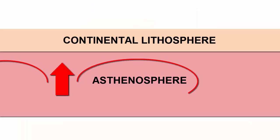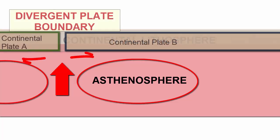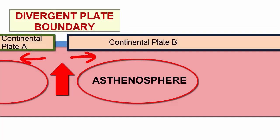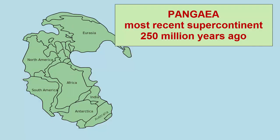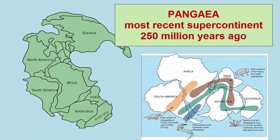When new convection cells form under a continent, divergence tears the continent apart. The most recent supercontinent that tore apart to create the current geometry of Earth's plates was called Pangaea, and based on fossil evidence, it existed 250 million years ago when all the continents we know today were fused together — one continent and one surrounding ocean.